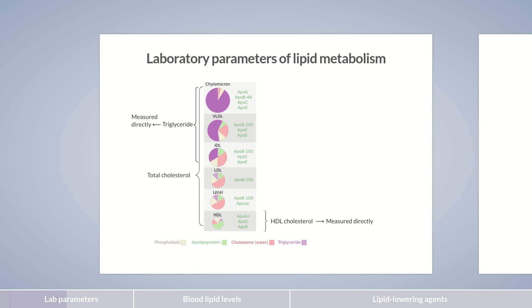Total cholesterol indicates how much cholesterol all lipoproteins combined carry in the blood. The LDL value is the most important risk factor for atherosclerosis and, therefore, most relevant for target values and follow-ups. The laboratory parameter LDL cholesterol usually includes the values for LDL as well as for lipoprotein(a), since lipoprotein(a) belongs to LDL particles due to its density. Since the direct spectroscopic measurement of LDL cholesterol is relatively expensive, it's often calculated using the Friedewald formula, which requires the values for total and HDL cholesterol, as well as triglycerides.